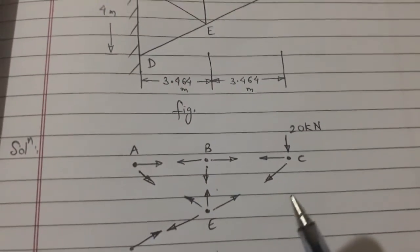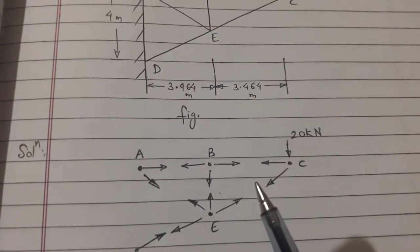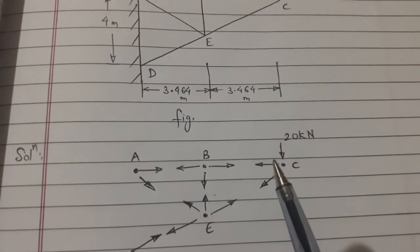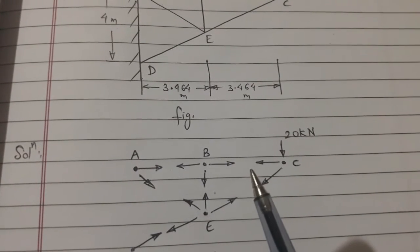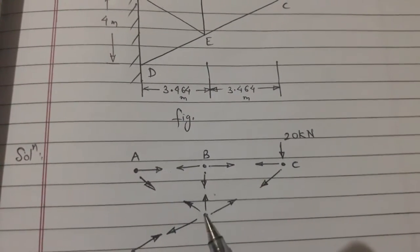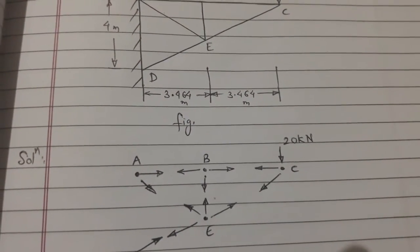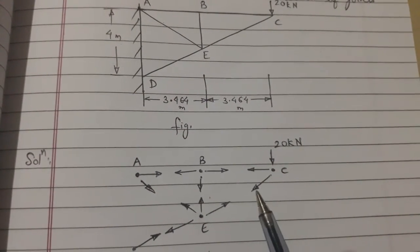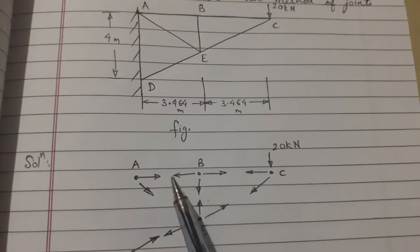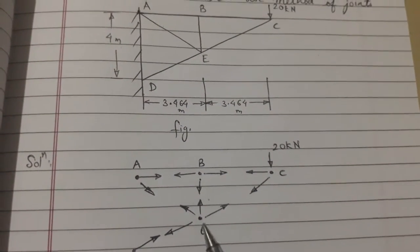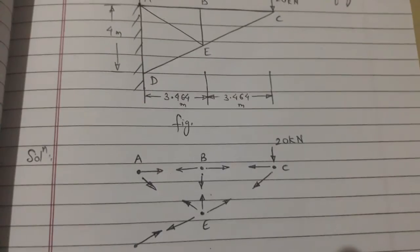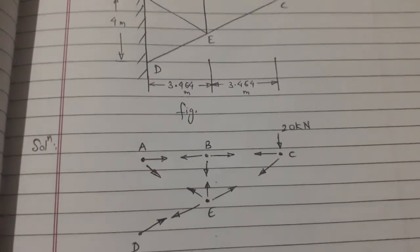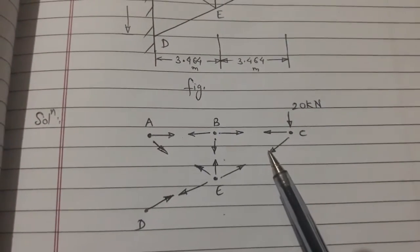Let us distribute the members in terms of the forces, how they will be acting towards or away from the joints. We have assumed that the forces are moving away from the joints. This is our only assumption. If the answer comes as negative, that means the direction is not away from the point, it is towards the point.